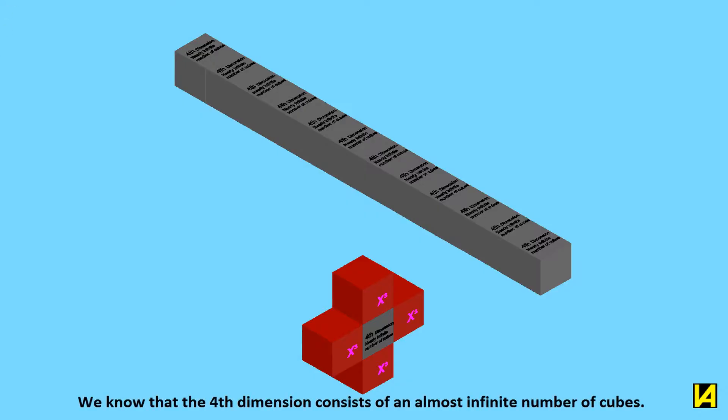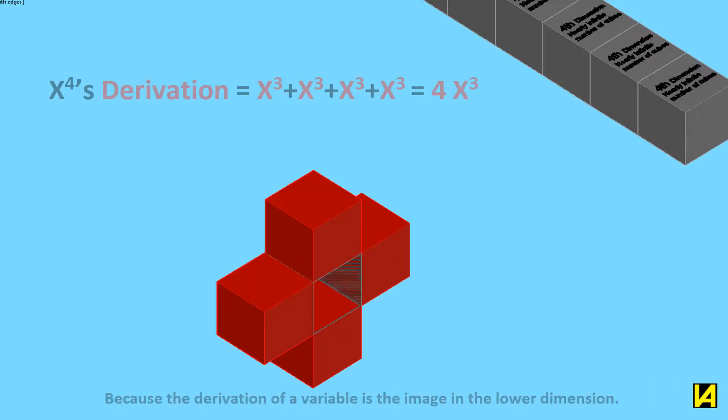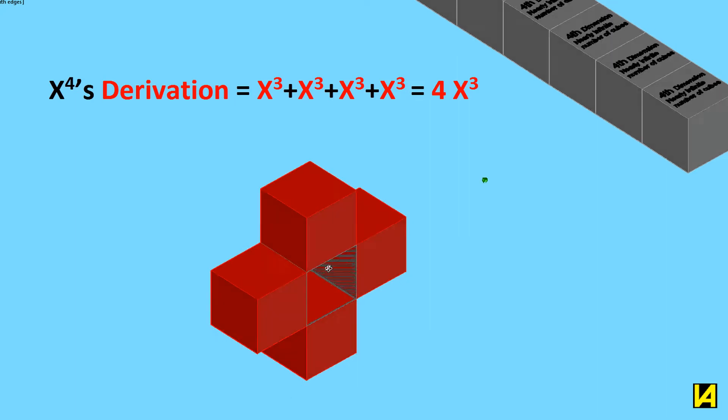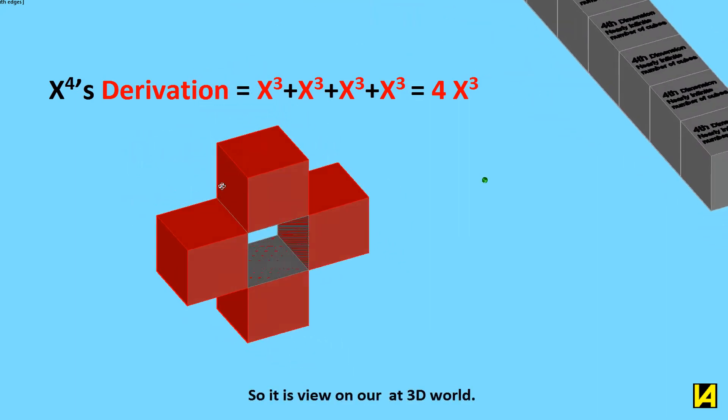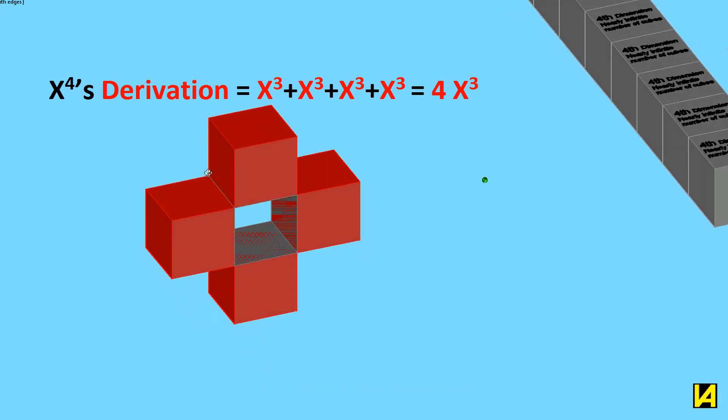We know that the fourth dimension consists of an almost infinite number of cubes. We did not know exactly what it was, but we saw what the derivative looked like. Because the derivation of a variable is the image in the lower dimension. So it is a view on our 3D world. That is, four pieces third dimension.